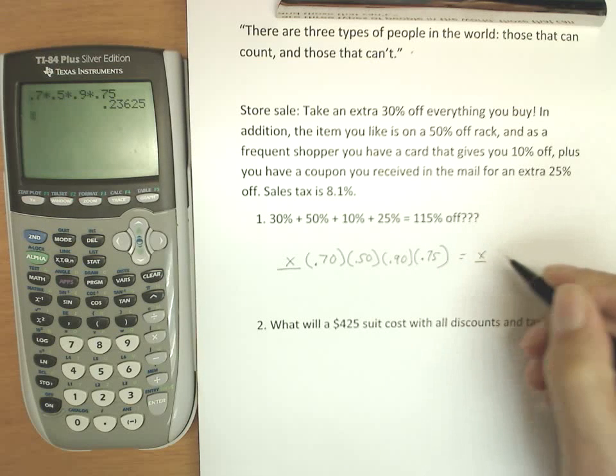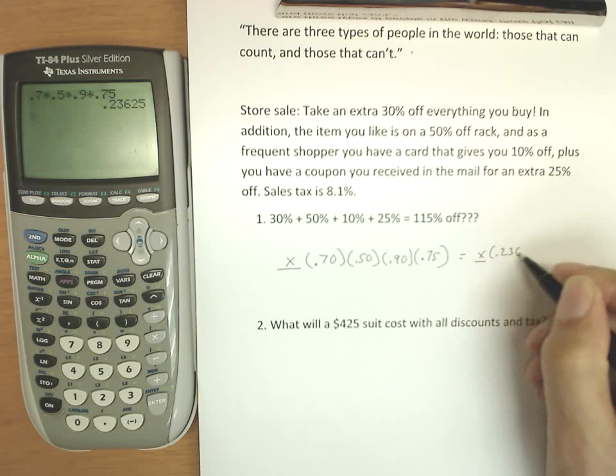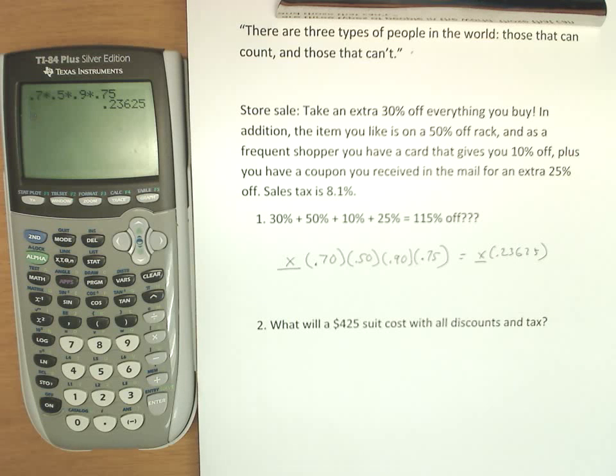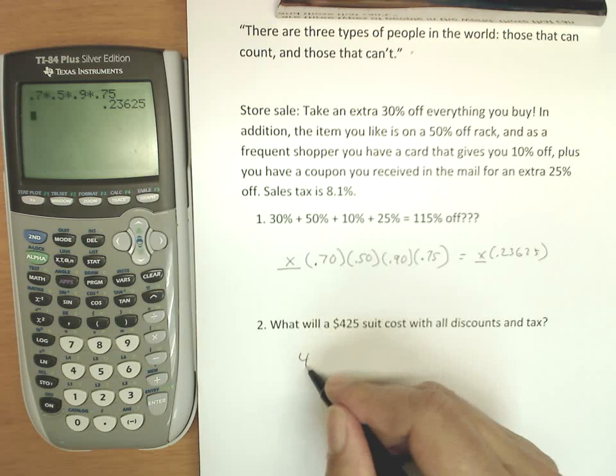We're going to have our price, whatever it is, times 0.23625. So I'm going to pay just under a quarter of what items are marked at.